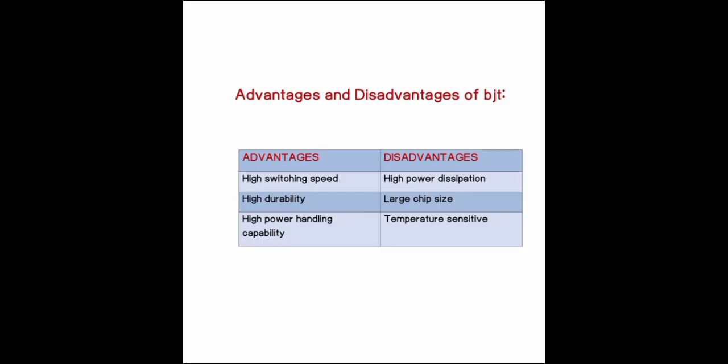Advantages and disadvantages of BJT. The advantages are high switching speed, high durability, and high power handling capacity. The disadvantages are high power dissipation, large chip size, and temperature sensitivity.